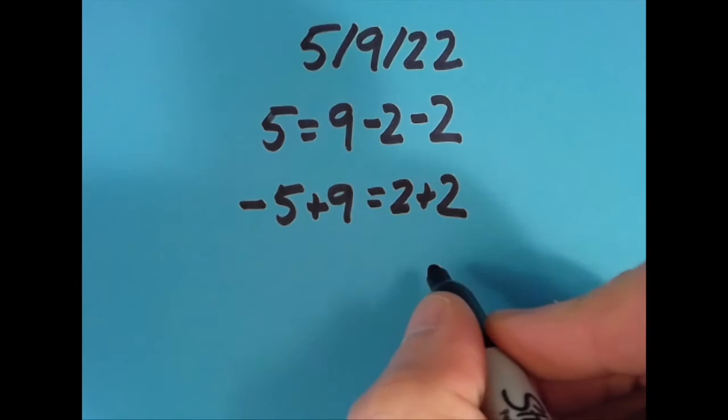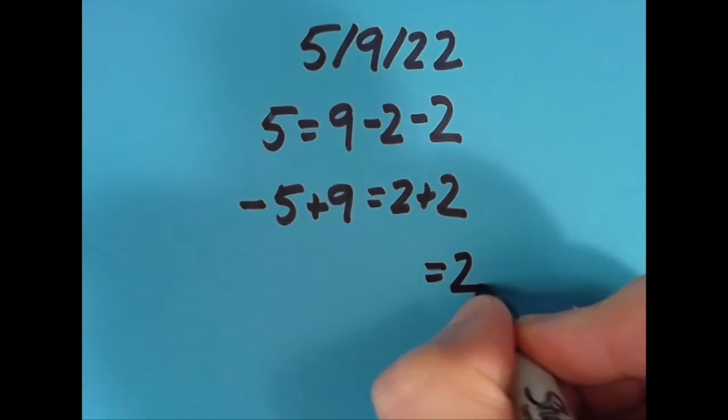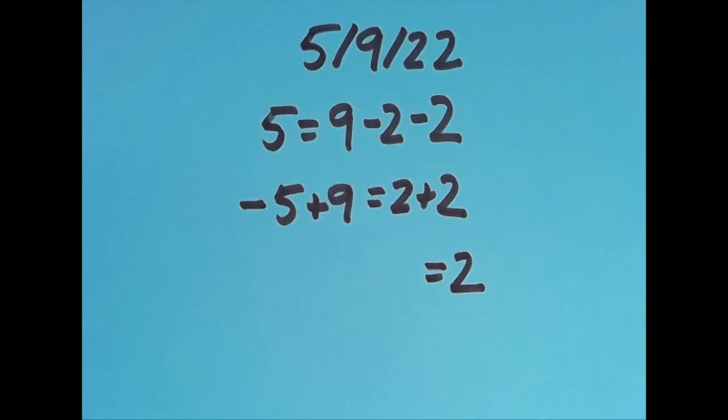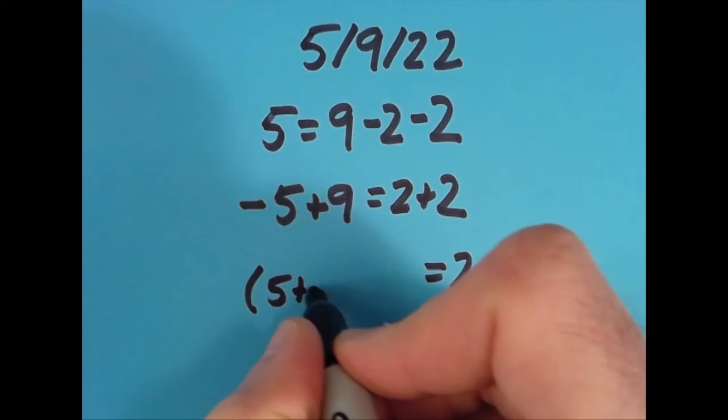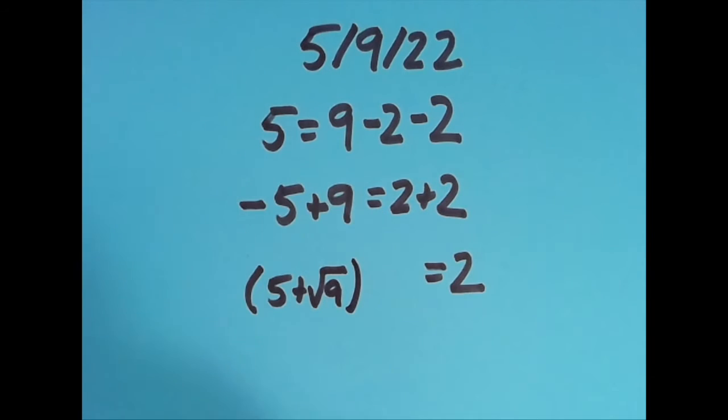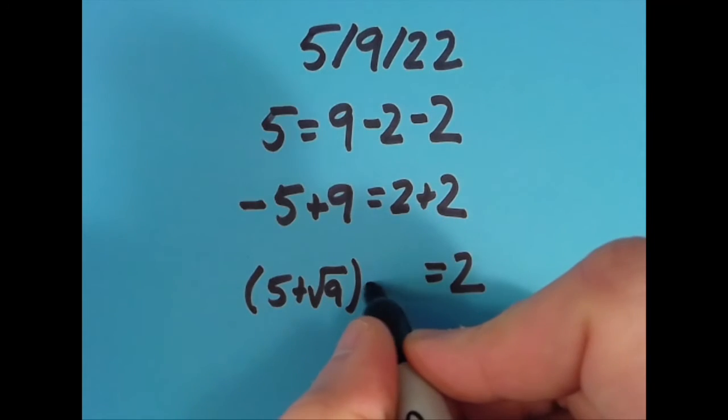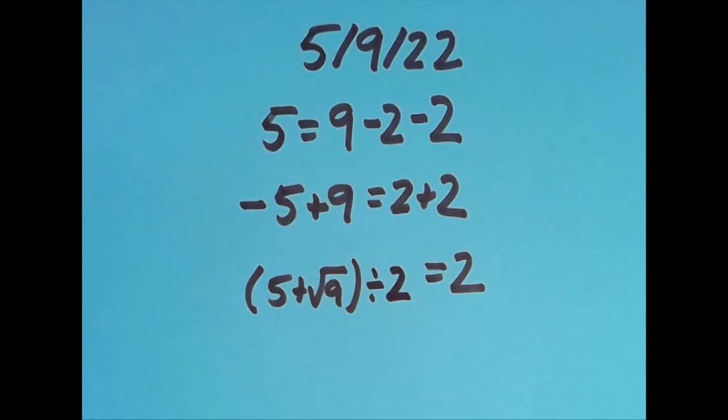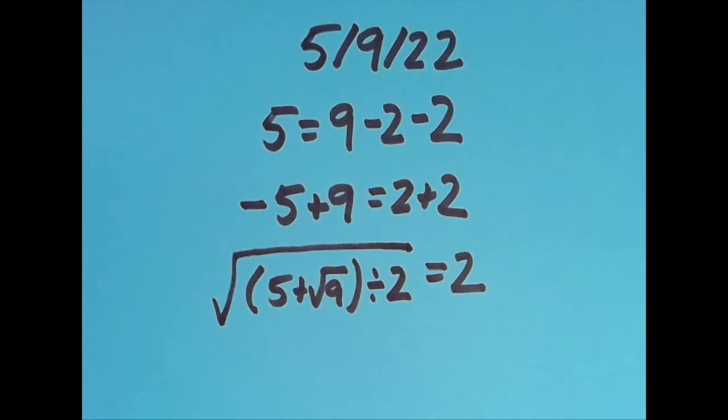And then lastly I wanted to put the equal sign in the final position. So what I did for this was I said 5 plus the square root of 9. So the square root of 9 is 3, 5 plus 3 is 8, 8 divided by 2 is 4, and then the square root of all of that, the square root of that 4, gives us 2.